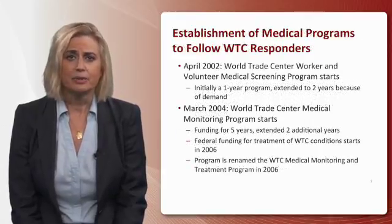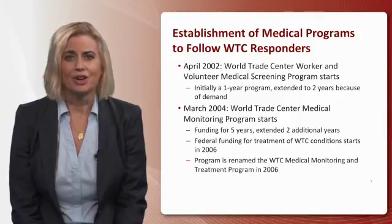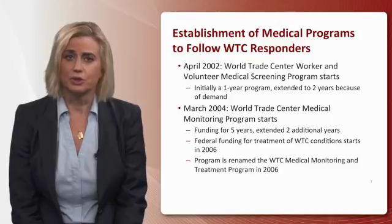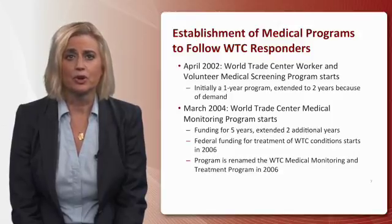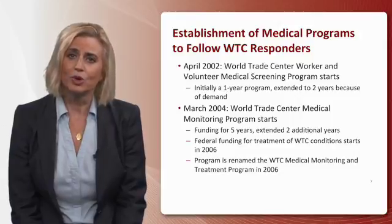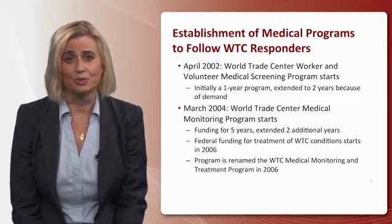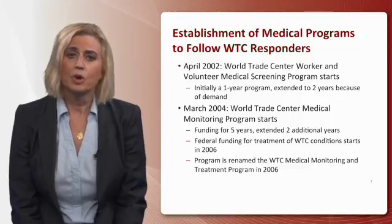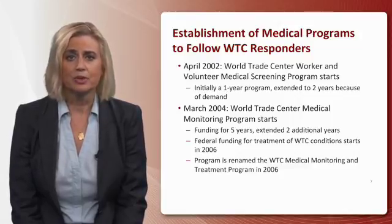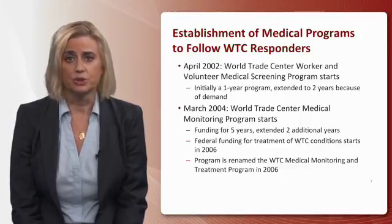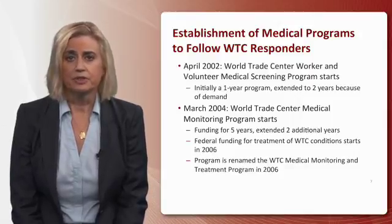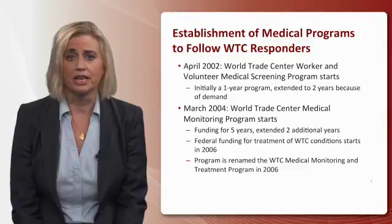To give a timeline on the establishment of the programs: in April 2002, the World Trade Center Worker and Volunteer Medical Program started as a one-year program, then extended to two years due to demand. In March 2004, it became the World Trade Center Medical Monitoring Program with five-year funding, eventually extended two additional years. In 2006, on the fifth anniversary, federal funding for treatment began, and the program was renamed the World Trade Center Medical Monitoring and Treatment Program.